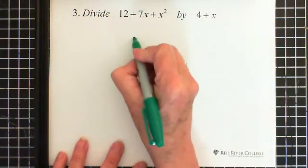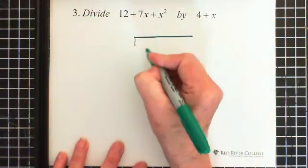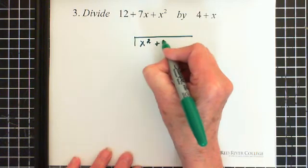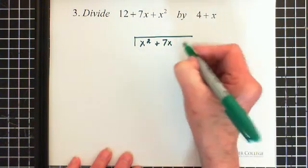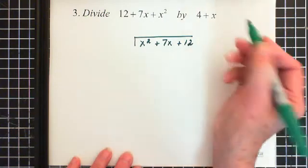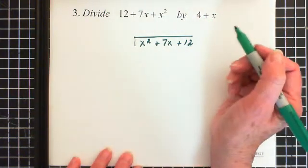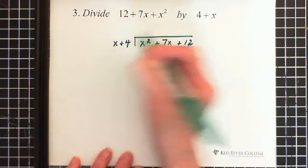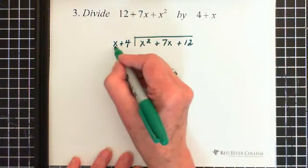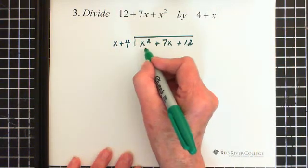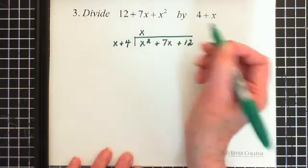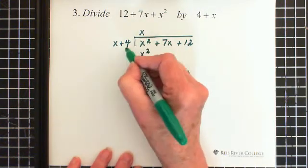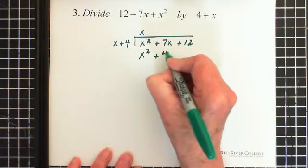Okay, so our dividend, and again this highest power goes first. x squared plus 7x plus 12. Our divisor, it has to be written with the x first. So we have x plus 4. We ask ourselves, what do we multiply by x to get x squared? That would be x. x times x is x squared.